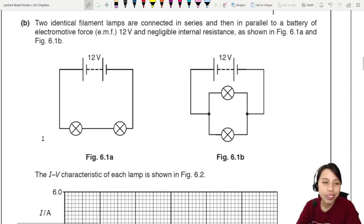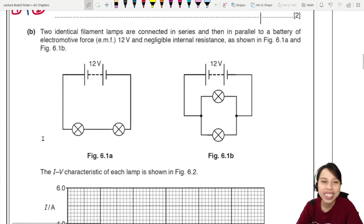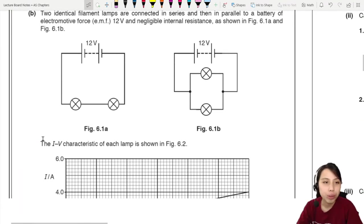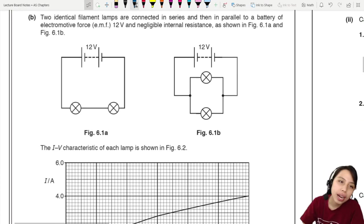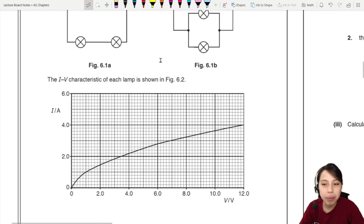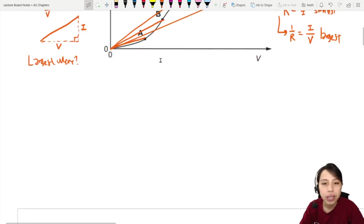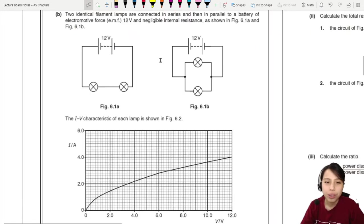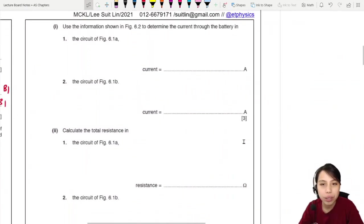Now we have a circuit in this way. It's an interesting one. If you have not tried this question, pause the video. Go try it out first. Because it's a good brain exercise. So we have two identical filament lamps. One's in series. One's in parallel with the battery. Negligible internal resistance. And they give us the I-V characteristic of each lamp.